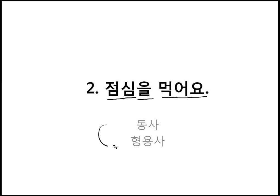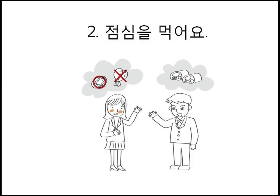Today we're going to focus on studying verbs and lots of adjectives which are related to the conversation. Take a look at this picture. Women and men are standing here, and they are talking about the lunch menu. He likes meat — it seems like 삼겹살. And she likes kimchi. However, she doesn't like chicken or meat.